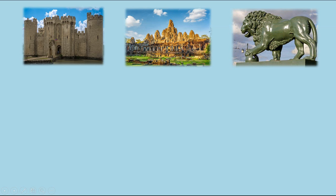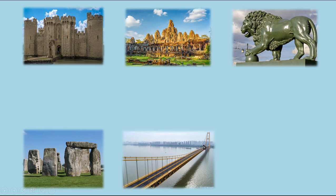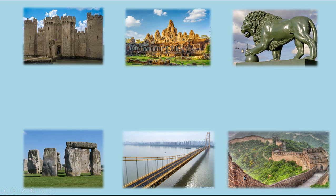Now let's review this. What is it? It's a castle. What about this one? We call this temple. What about this one? We call this statue. What about this one? In another country — monolith. What about this one? Bridge. What about this one? We call this wall.